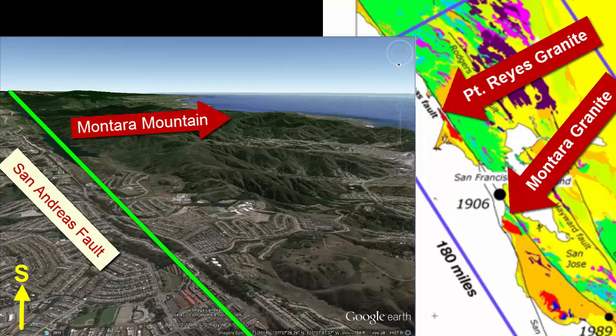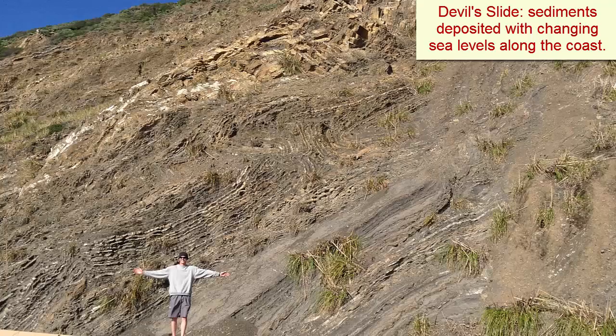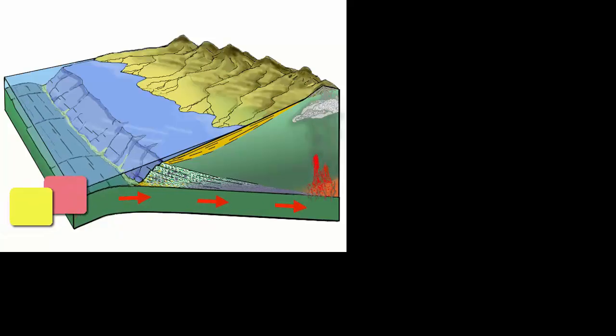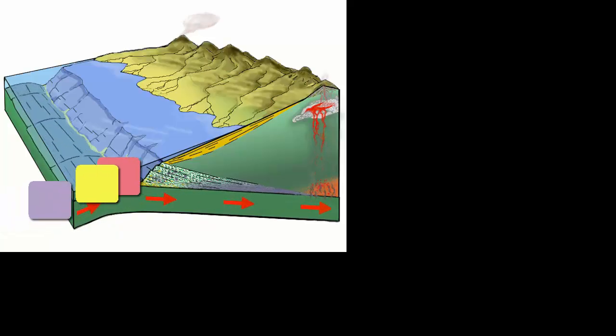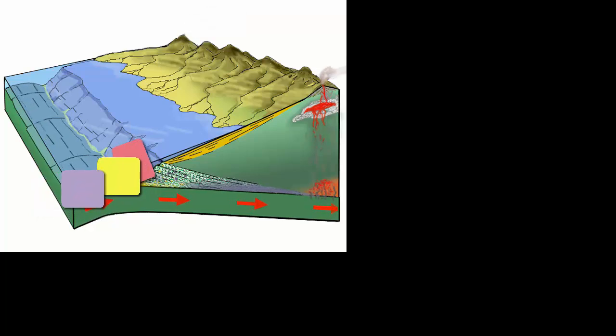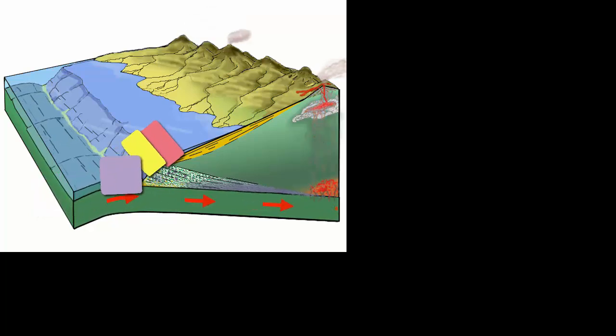What about the rest of the rock around us? Where did that come from? While some of the rock that makes up the Santa Cruz Mountains and the hills of San Francisco comes from recent deposition of coastal sediments during changing sea levels and ice ages, the majority consists of individual blocks of terrains that were accreted during past periods of subduction.